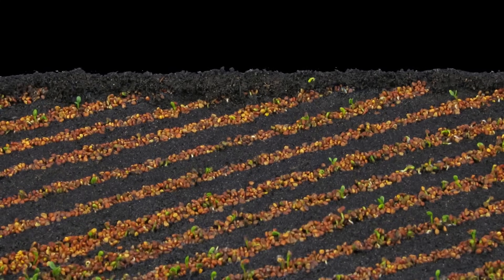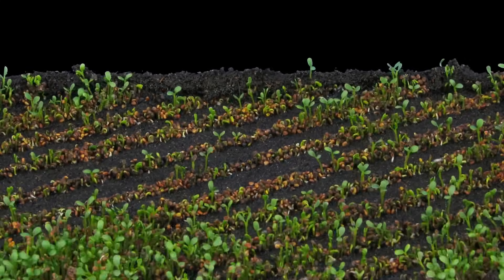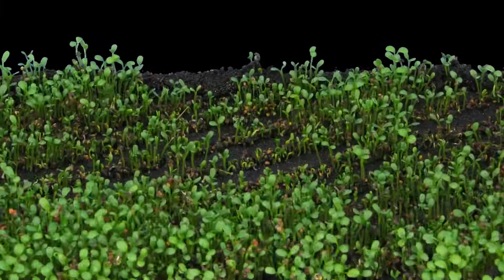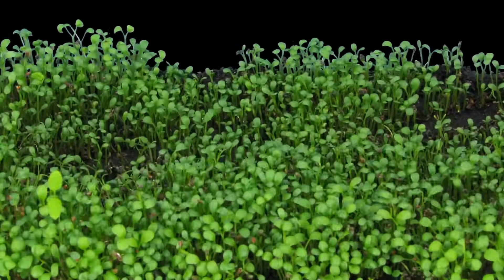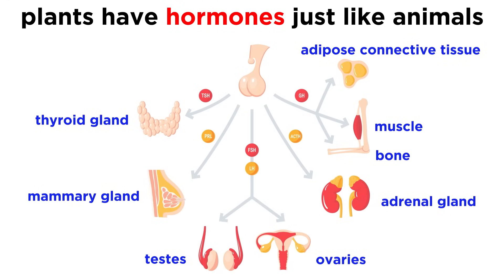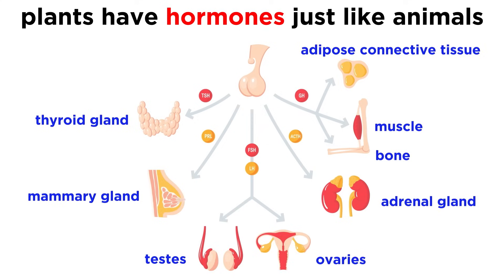So how does a plant know when to start growing, when to switch modes of growth, or even which way is up so that it grows out of the soil into the sunlight? Just like animals, plants have a series of hormones that trigger and regulate their growth. Hormones are chemicals that affect processes occurring inside a living organism. It is this similarity in function, rather than their chemical structure, that causes hormones to be grouped together.